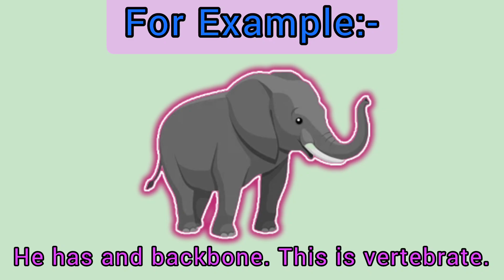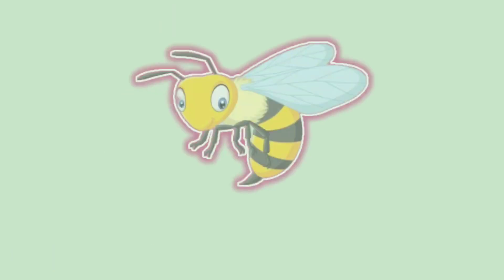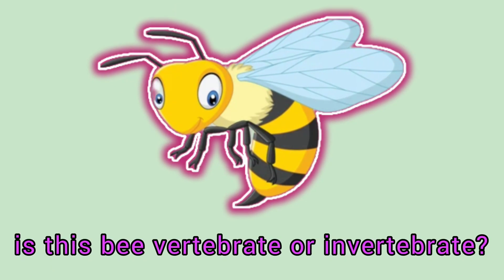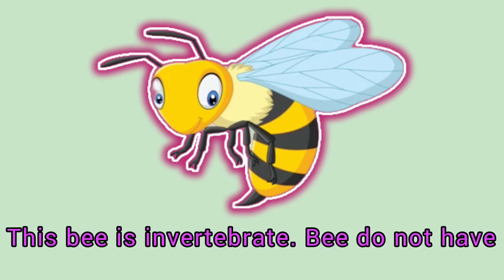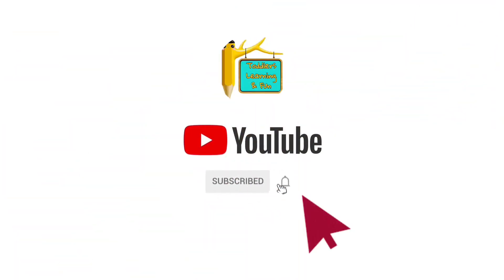This elephant is a vertebrate because it has a backbone. Is this bee a vertebrate or invertebrate? Bees have no backbone, so this is an invertebrate. If you liked this vertebrates and invertebrates for kids video, please like and subscribe. See you in the next video, bye bye!